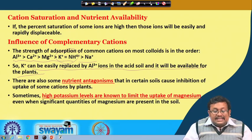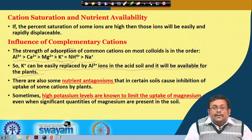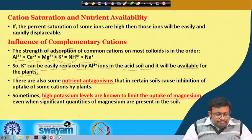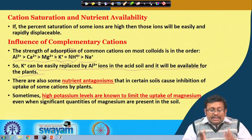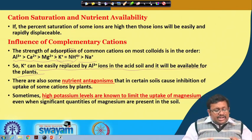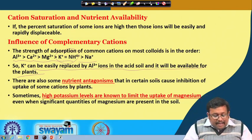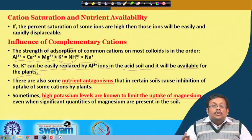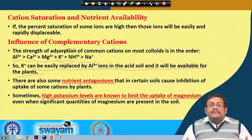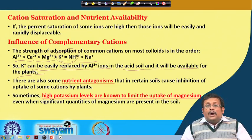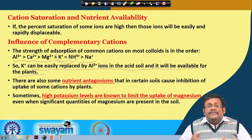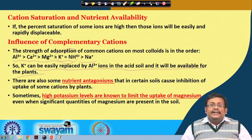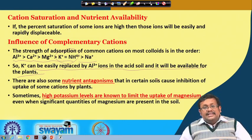In acid soil, aluminum will replace potassium, and that potassium will be available to the plants. There are some nutrient antagonisms — an important aspect where certain soil conditions cause inhibition of uptake of some cations by plants. For example, high potassium levels are known to limit the uptake of magnesium. Potassium and magnesium have a nutrient antagonism even when significant quantities of magnesium are present in the soil.